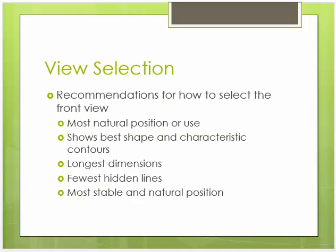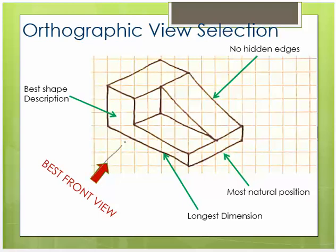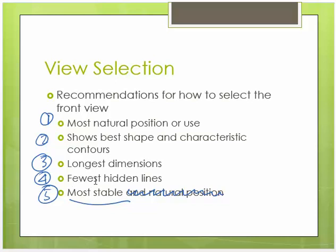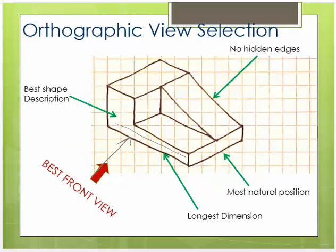Recommendations for how to select the front view. We kind of talked about this earlier. First of all, put it in its most natural position. Then, shows the best shape and characteristic contours. Make sure you're including the longest dimensions. Pick the ones with the fewest hidden lines. Pick the position where it's most stable. How is it going to stand on its own? So here's an example of what they're calling to be the best front view. Yes, it has the longest. If we set it there, it's going to be stable. It's in its most natural position. It shows the best shape and characteristics. I see all the detail. It's got the longest dimensions. There are no hidden lines. It's very stable. It's not going to topple over.